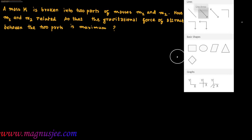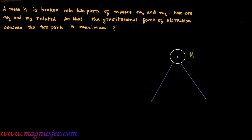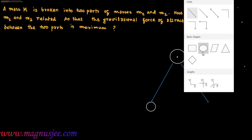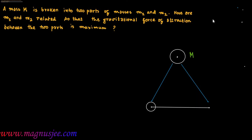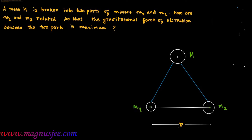In the diagram, capital M is the mass of the body which is broken into two parts having masses M1 and M2. R is the distance between the centers of the two parts of masses M1 and M2. FG is the gravitational force of attraction acting between the two parts.